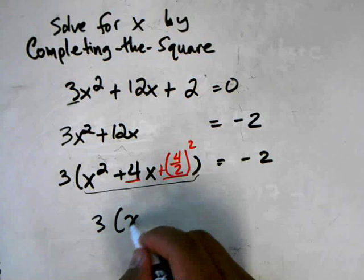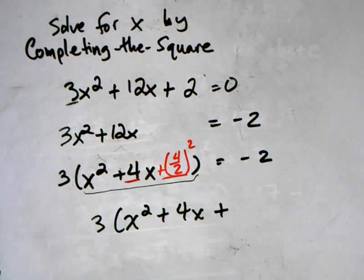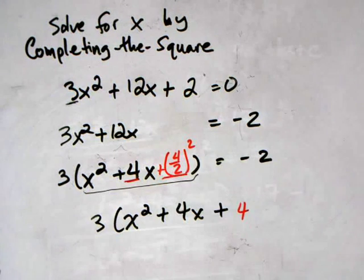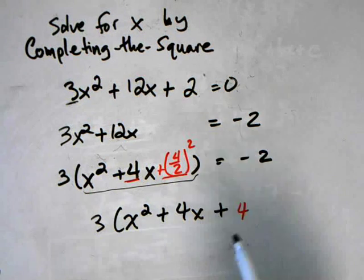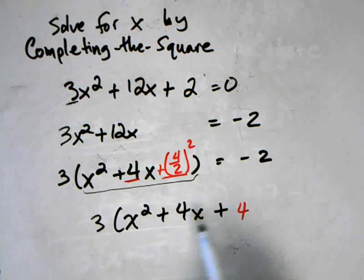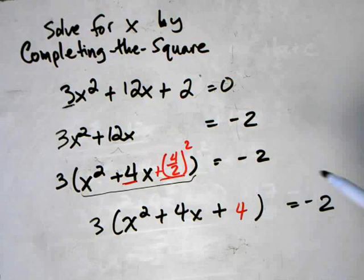3(x² + 4x + 4). So this part right here turns out just to be 4. It's very much a coincidence that these two numbers are exactly the same, it's just a coincidence for this particular problem.